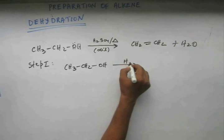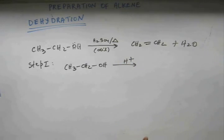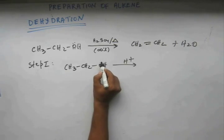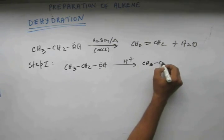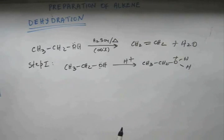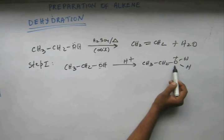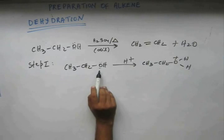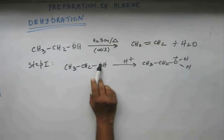So the first step is protonation. This H+ or this proton will come out and would form a bond with oxygen. When oxygen forms the bond it has to give its electron to hydrogen which is having empty orbital. So electronic transfer has to occur from oxygen to hydrogen so oxygen will develop a plus charge.